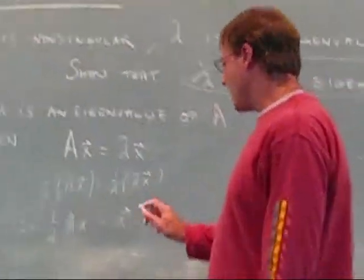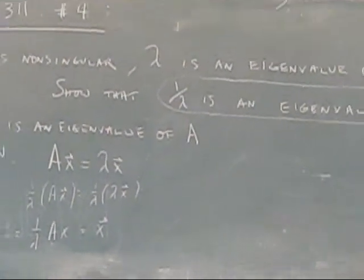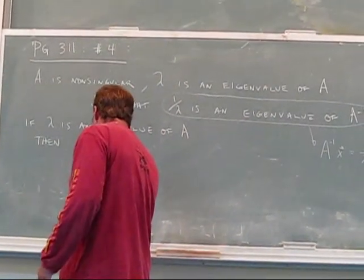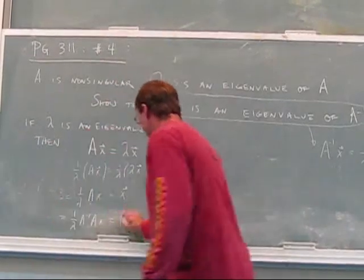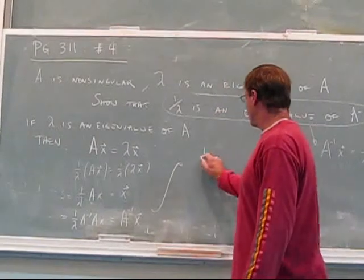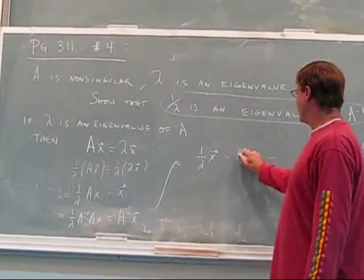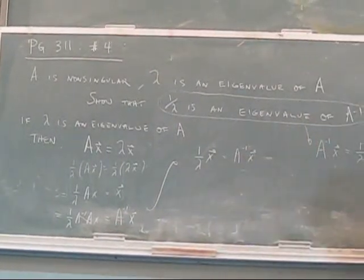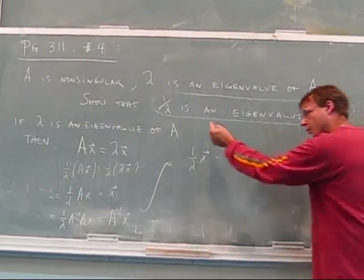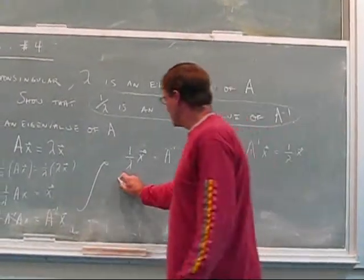So now let's multiply both sides by A inverse, because it has to be involved. If I multiply by A inverse, that gives me 1 over lambda x, because these cancel. So look what I've found. I've found that when we take A inverse and we multiply it by this vector, we get 1 over lambda times the vector. That's exactly the definition of an eigenvalue.